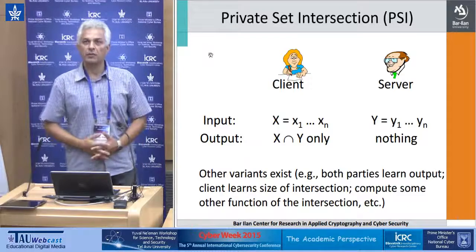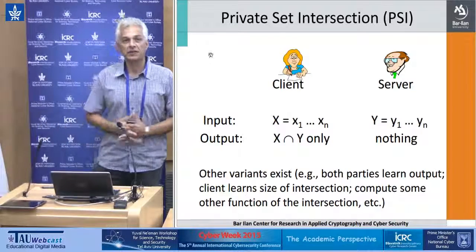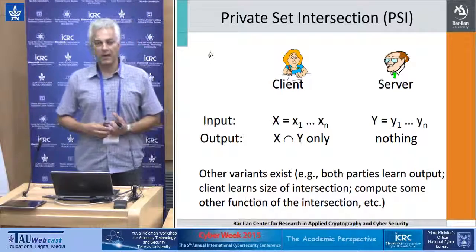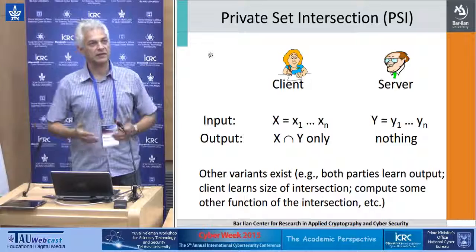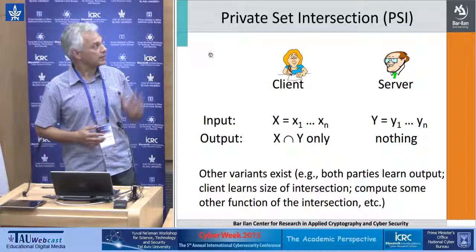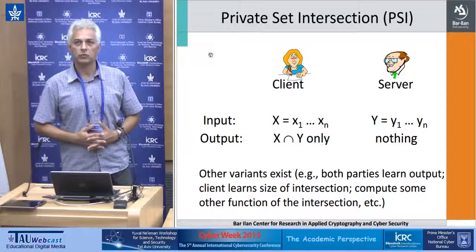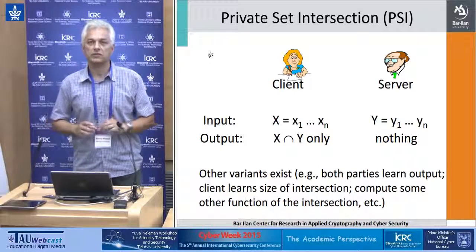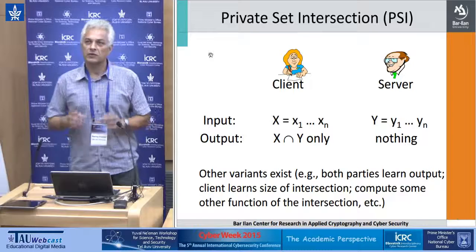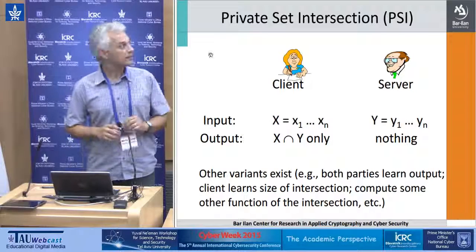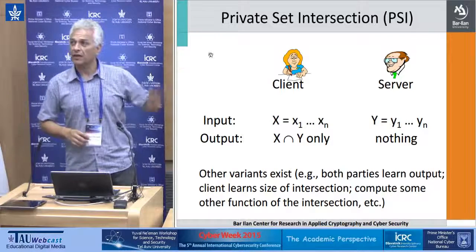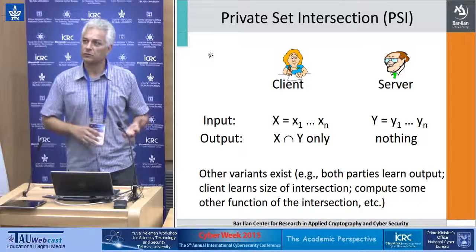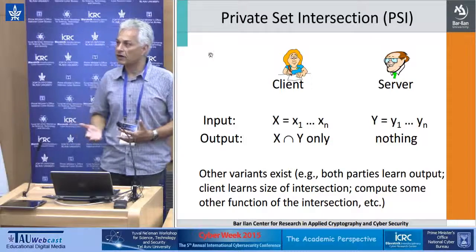The problem is private set intersection. We have two parties — we love to call them Alice and Bob. Each one of them has a private set of items. Alice has X1 up to Xn, and Bob has Y1 up to Yn. Suppose that Alice wants to learn the intersection of the two sets and nothing more. Bob learns nothing. We can also think about variants where both parties learn the outputs, or perhaps they only learn the size of the outputs, or some other function.